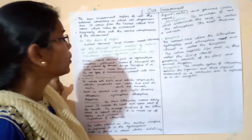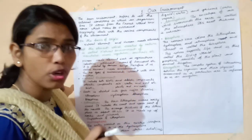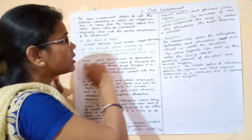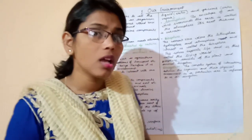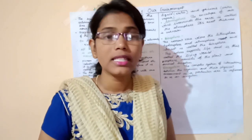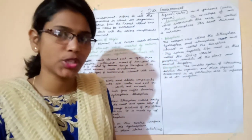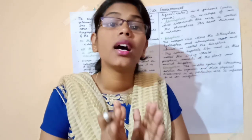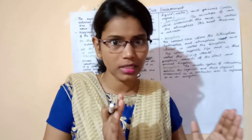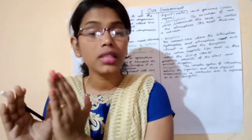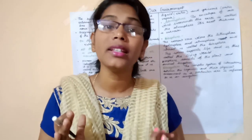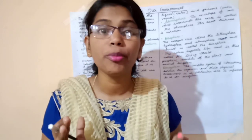On the basis of origin, geographical elements are classified into two types: first, natural elements, and second, human-made elements. All things created by nature are considered natural elements and form part of the natural environment. All things created by human beings are considered human-made elements and come under the human-made environment.